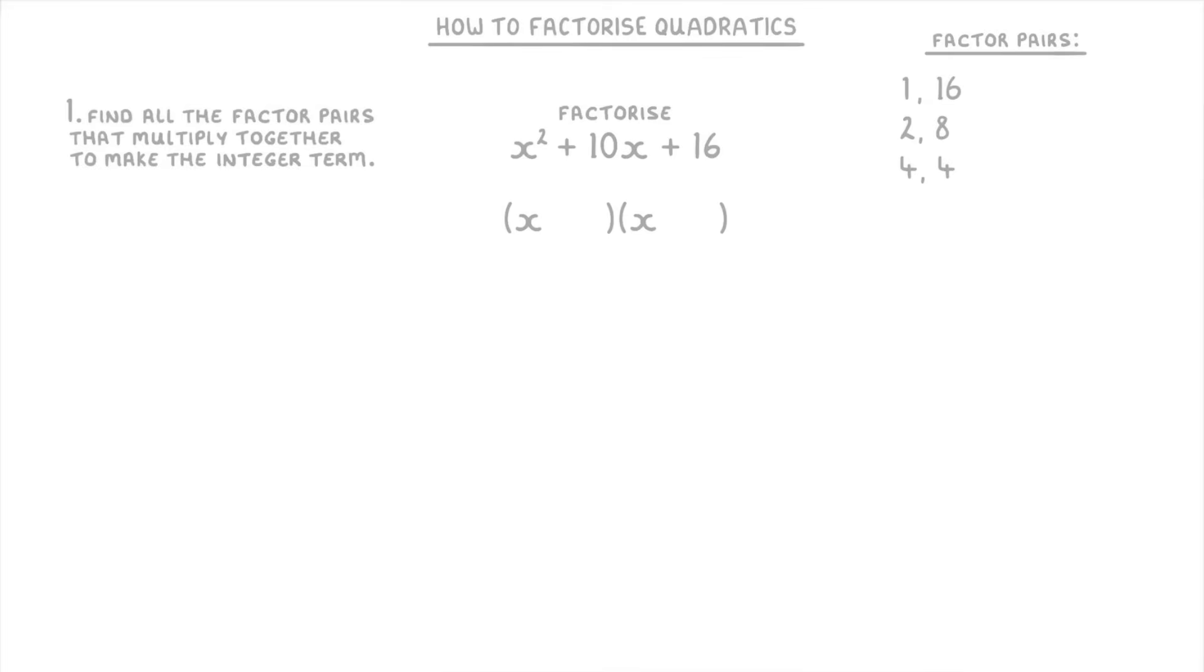One thing to remember though is that because 16 is a positive number we can also make it by multiplying the negative versions of these numbers together. So as well as these three positive factor pairs we also need to list the negative factor pairs: negative 1 times negative 16, negative 2 times negative 8, and negative 4 times negative 4.